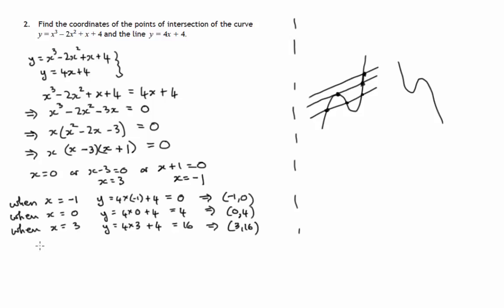We'll maybe round it off with a sentence. The points of intersection are negative 1, 0, 0, 4 and 3, 16.